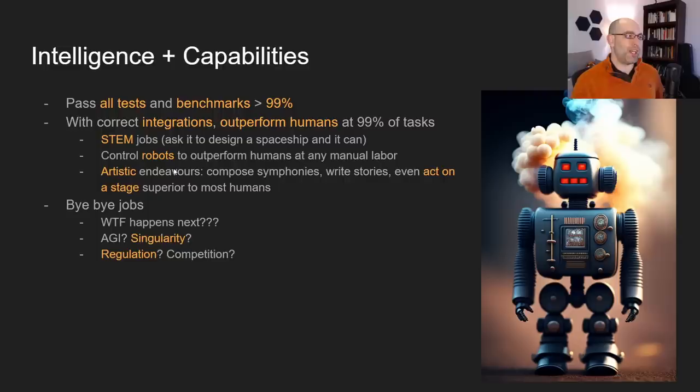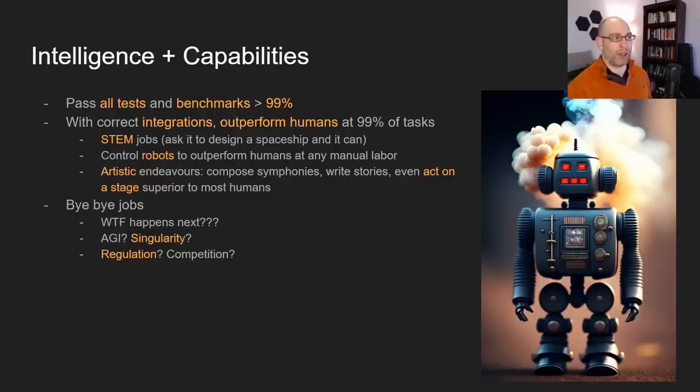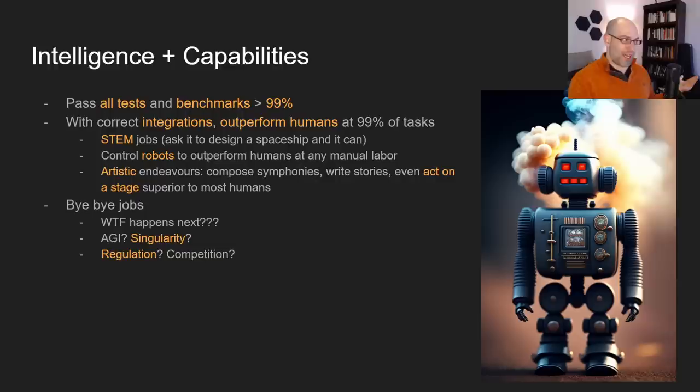An even more controversial prediction: GPT-5 will be able to surpass humans in most artistic endeavors as well — writing symphonies, composing stories, and even acting on stage given the correct rigging and framework, like controlling a virtual actor in Unreal Engine or a robotic actor. Disney is making very lifelike animatronics. I suspect human actors are going the way of the dinosaurs — human actors are expensive, and many have already signed away their likenesses, some unwittingly, while others — voice actors and aging actors — have deliberately signed their likeness away to be immortalized in AI.